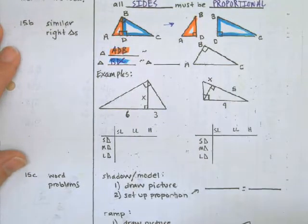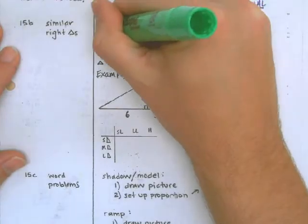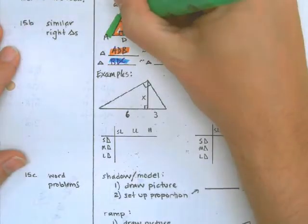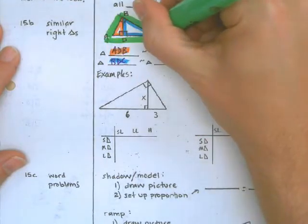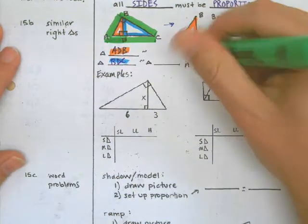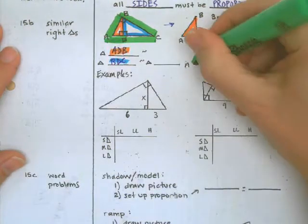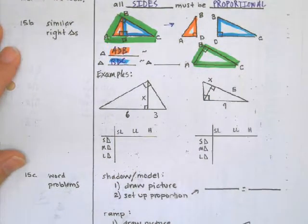And the last triangle in this picture would be that one, which is also pictured here. And the name of that triangle would be triangle ABC.